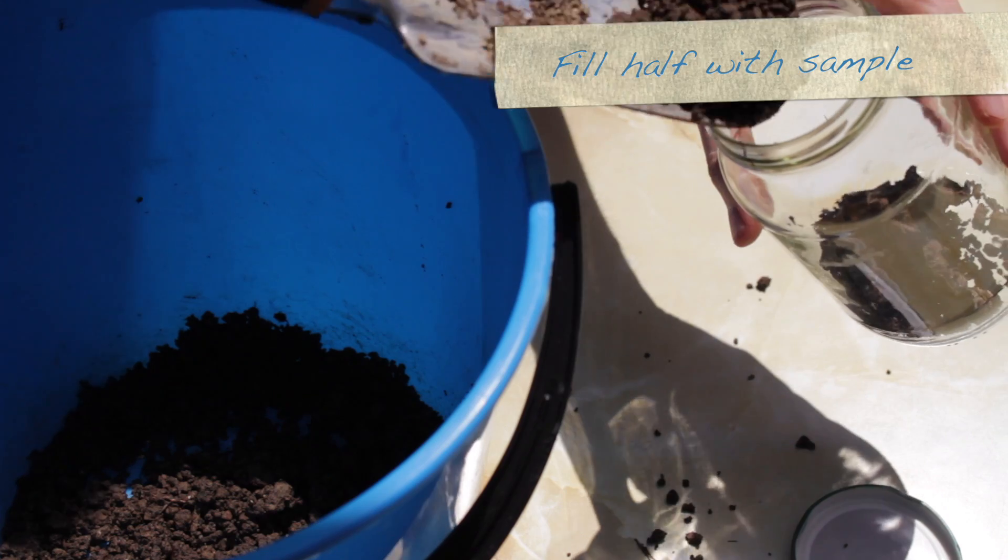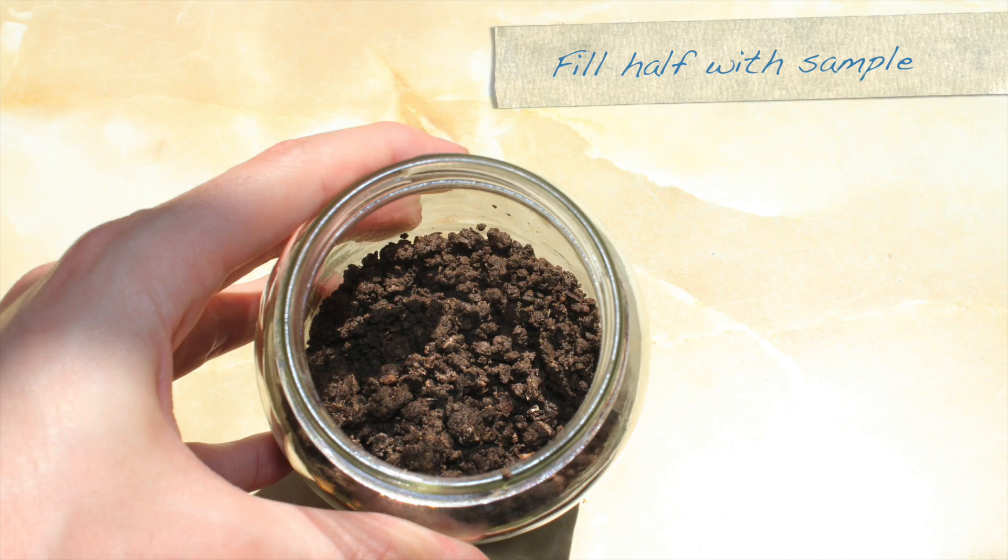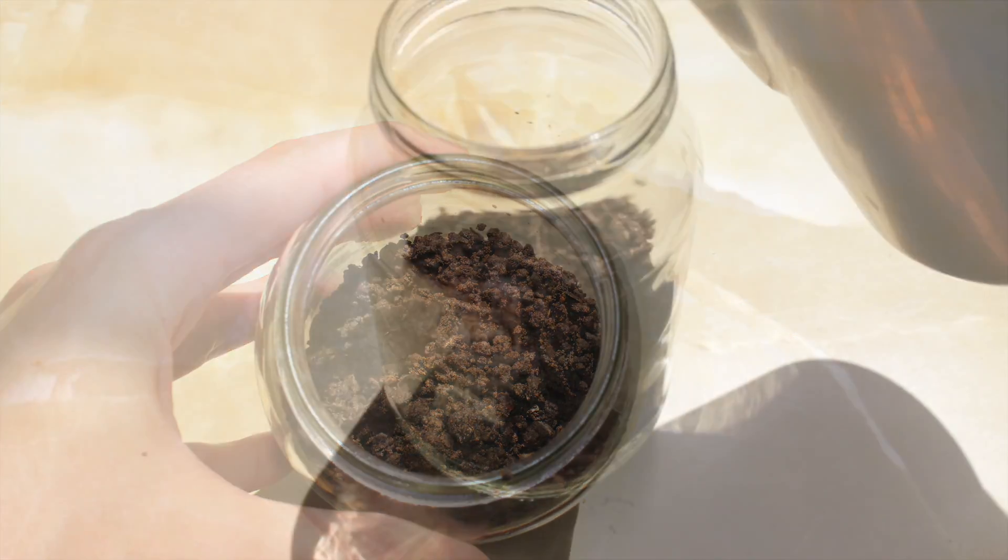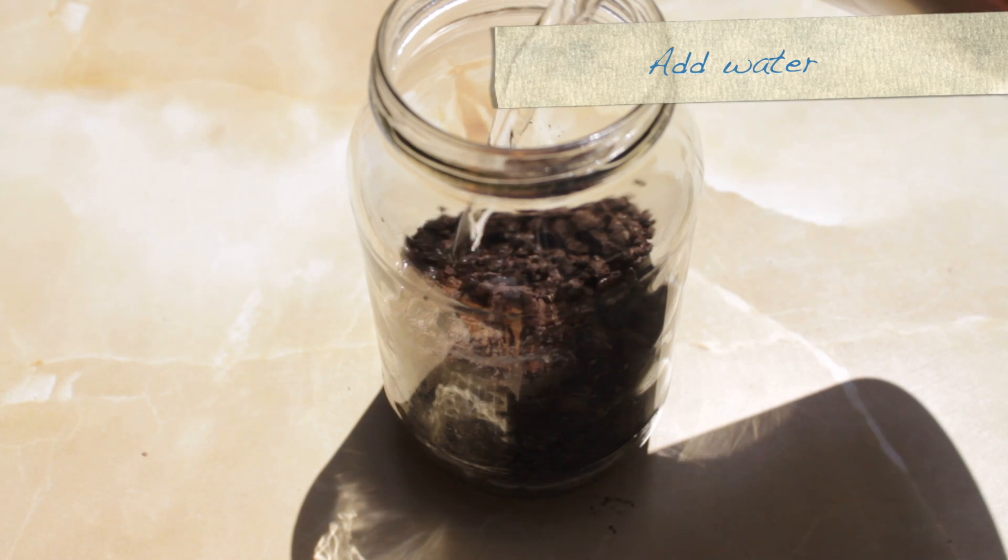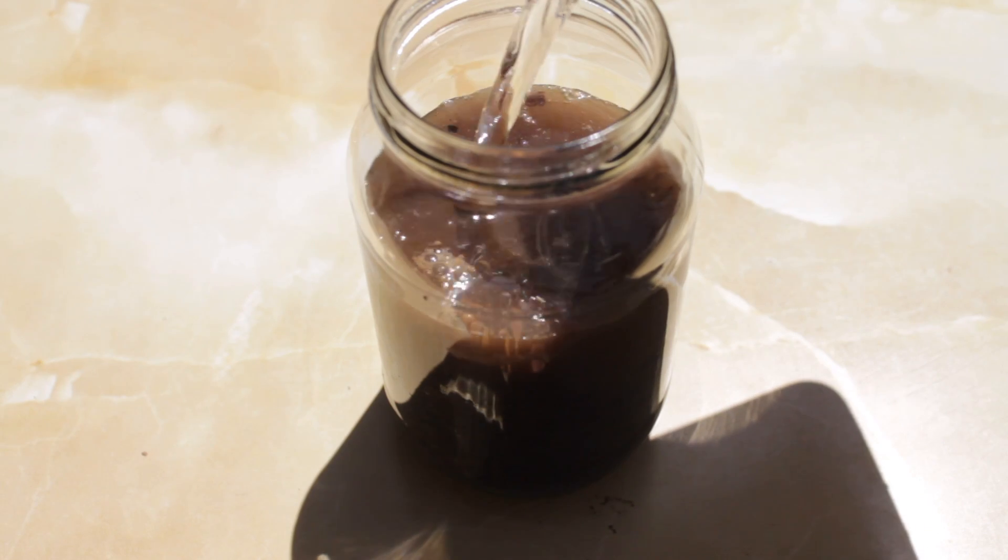Next, we filled the mason jar about halfway up with the mixed soil we took from our bed, and filled up almost to the top with water, being careful to leave a little bit of headroom at the top for shaking.